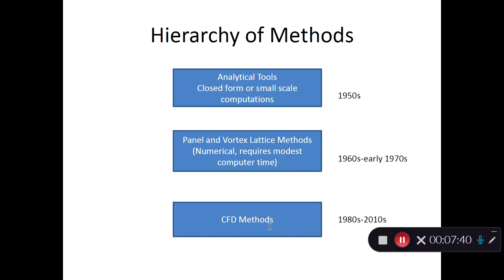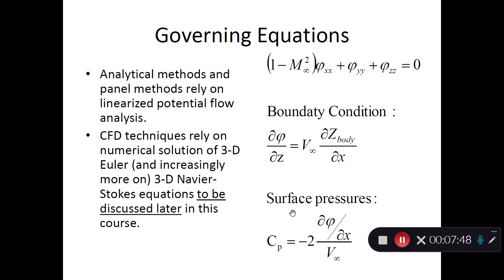The most accurate but computationally expensive methods are CFD-based techniques. The linearized potential flow equation involves the small disturbance potential phi, where the Mach number is greater than 1 making this a negative term. The boundary condition is applied directly on the body surface rather than on a projected plane.